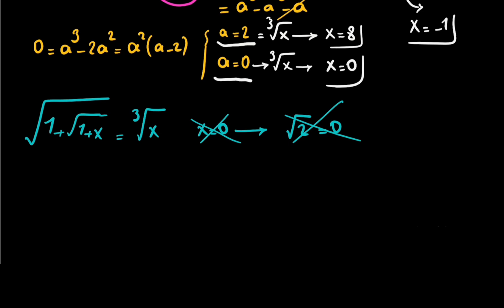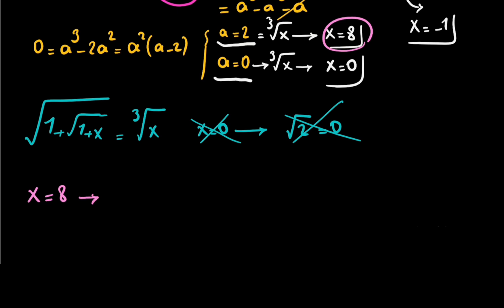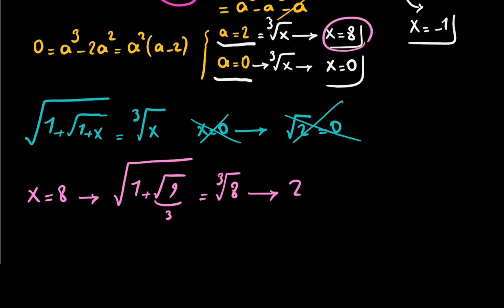Checking x equals 8: on the left side we write 1 plus square root of 1 plus 8, which is square root of 9, giving us square root of 1 plus 3, which equals square root of 4, equals 2. On the right side, cube root of 8 is also equal to 2. So x equals 8 checks out.